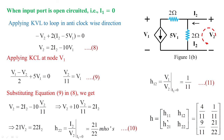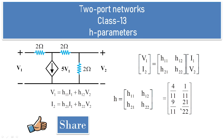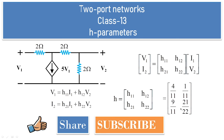These H parameters can also be determined using admittance parameters, transmission line parameters, and Z parameters — methods discussed in previous classes. Please follow the normal approach, the substitution approach, and the conversion approach to find the other parameters and compare results with the H parameters — that is the homework for this class. In today's class 13, we dealt with H parameters and obtained the result shown in matrix form. Please share, subscribe, and press the bell icon. Thank you.